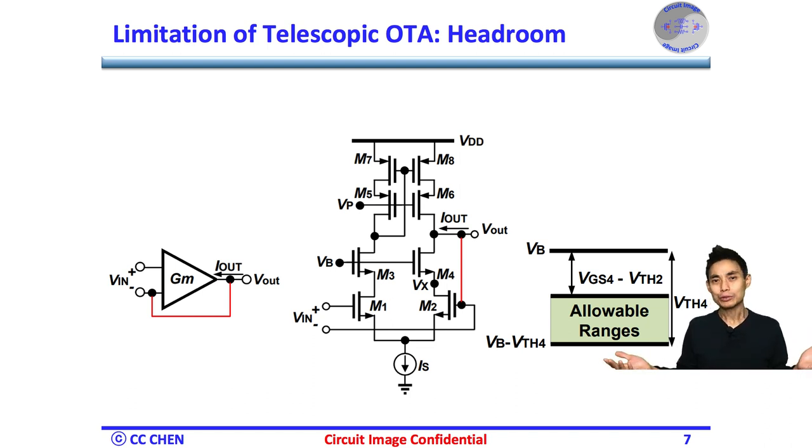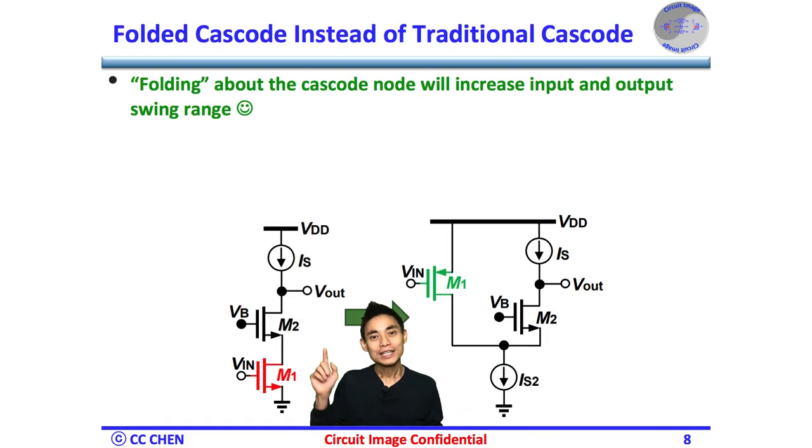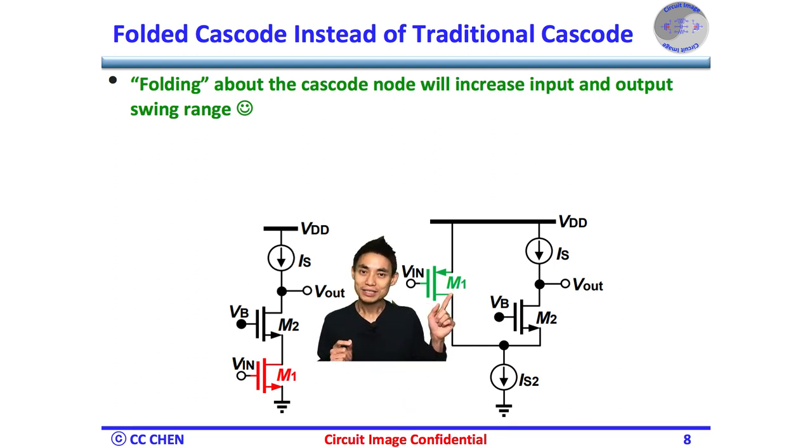So what can we do to mitigate the headroom issue here? Think about all the M4's headroom diagrams here. Bingo! First, if both the input and output devices are all N-type or P-type, the headroom constraint is inherent. The only hope is from different types of devices on the input and output path respectively. The simple folding diagrams here show you the idea of applying different types of devices that would decouple the voltage level constraint between the input and output. The allowable swing level would be an exercise for you.